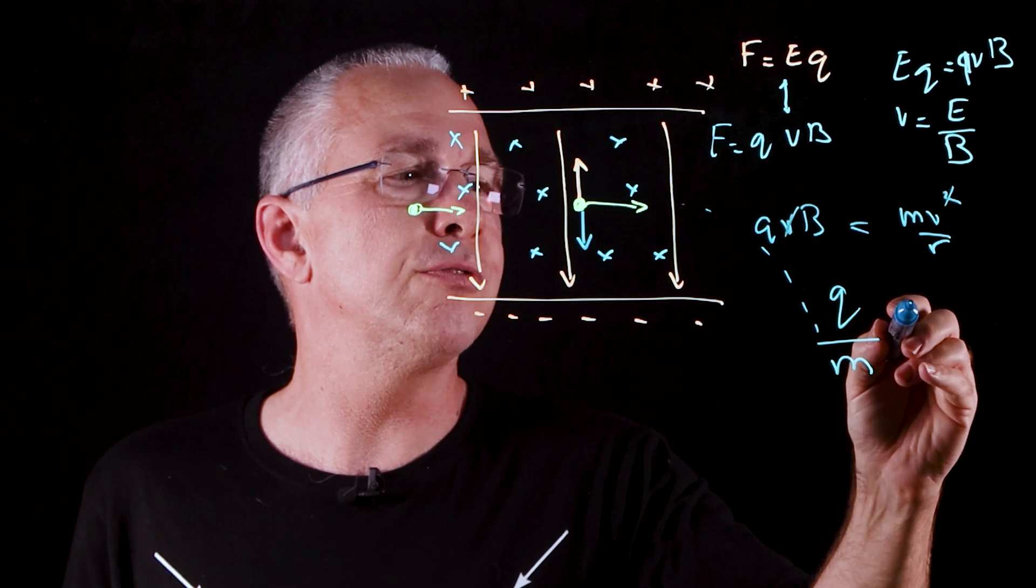Now if we rearrange this, you can see that our velocities cancel out to some degree. And what he was interested in is the charge to mass ratio. So when you rearrange this, you get the charge to mass ratio is equal to v over Br.